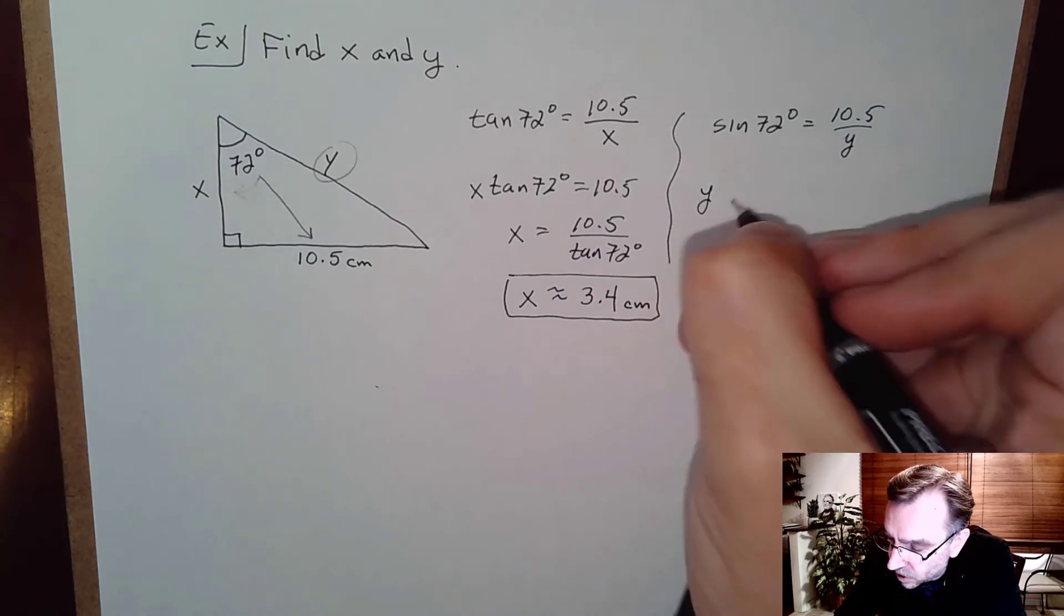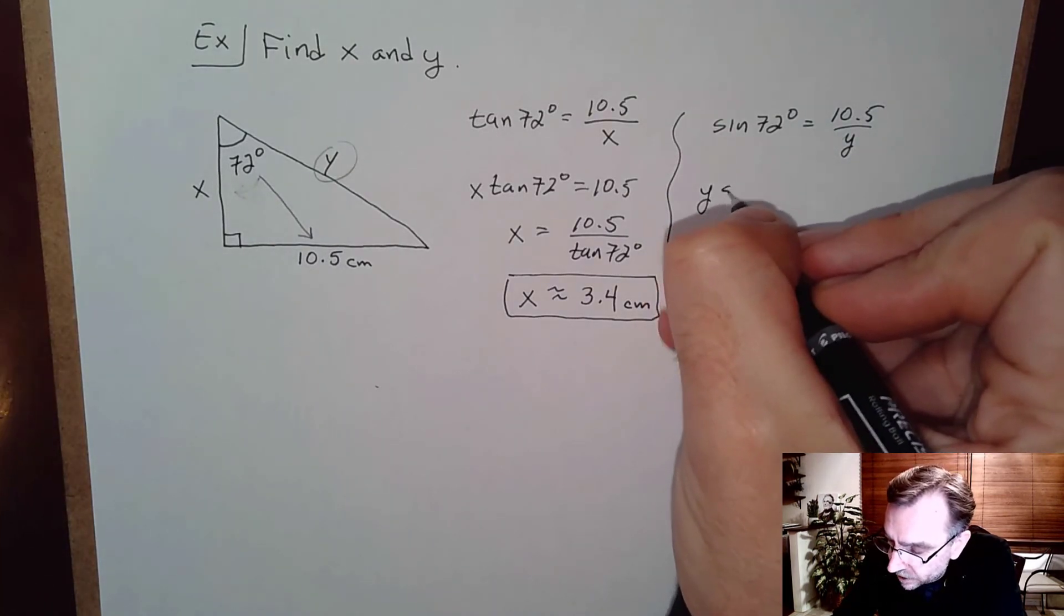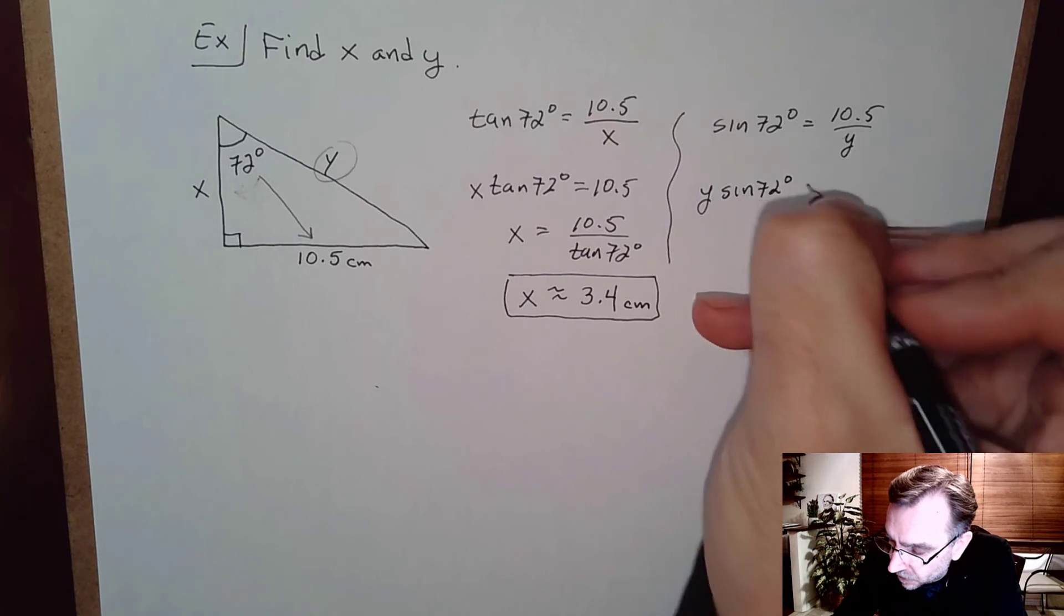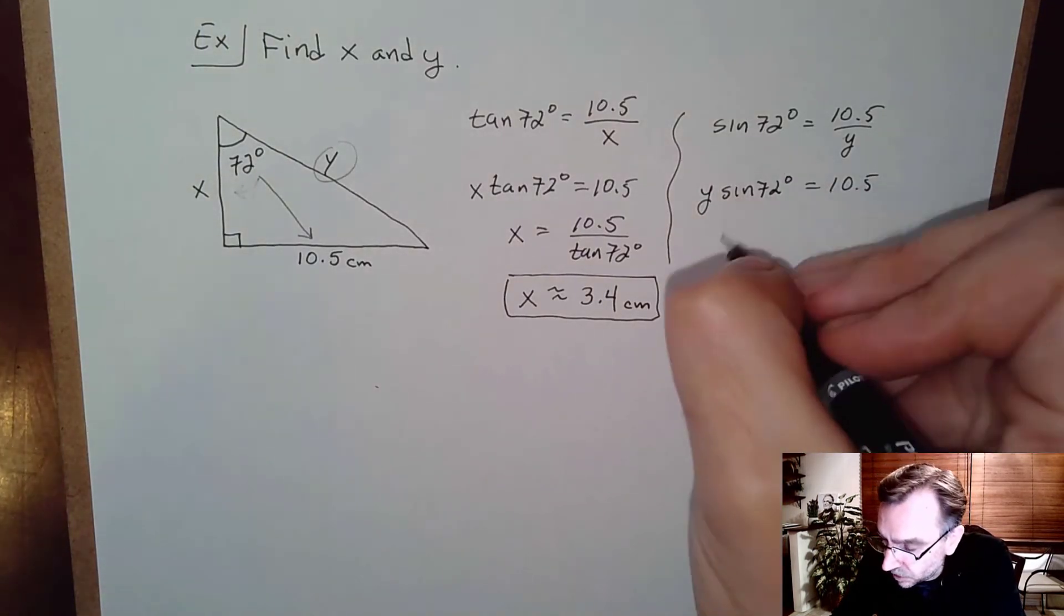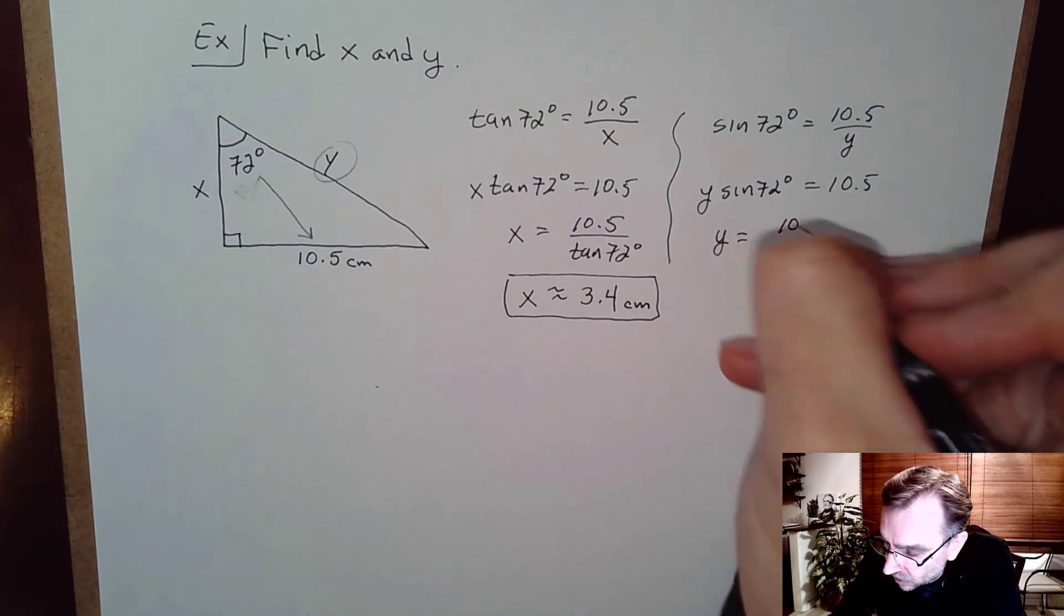So now we'll solve for y, cross multiplying. Y times sine of 72 degrees equals 10.5. And then dividing by sine of 72, we get y equals 10.5 divided by sine of 72.